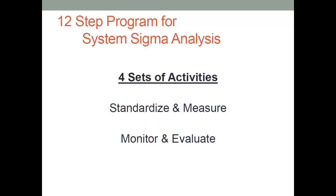There were four sets of activities. Any good quality control program should be based on measurements and parameters and things that are understandable, not just descriptions, but things that can be monitored and evaluated. So there are four sets of activities that led to four triads of steps in really evolving this ongoing SGMA quality control program.